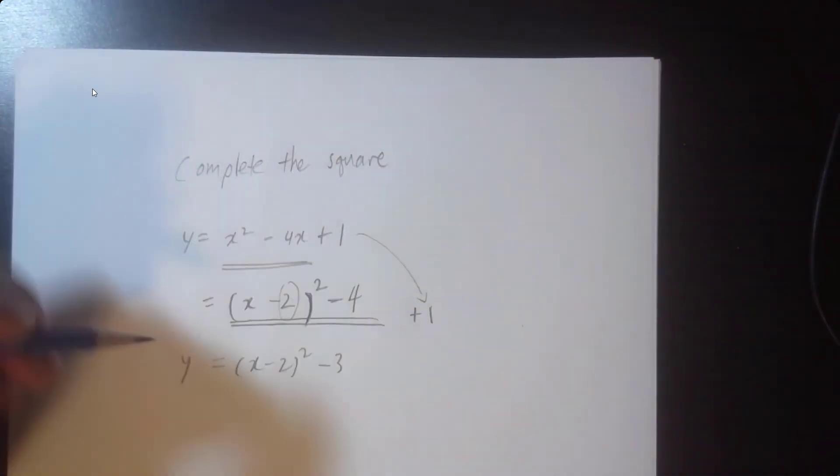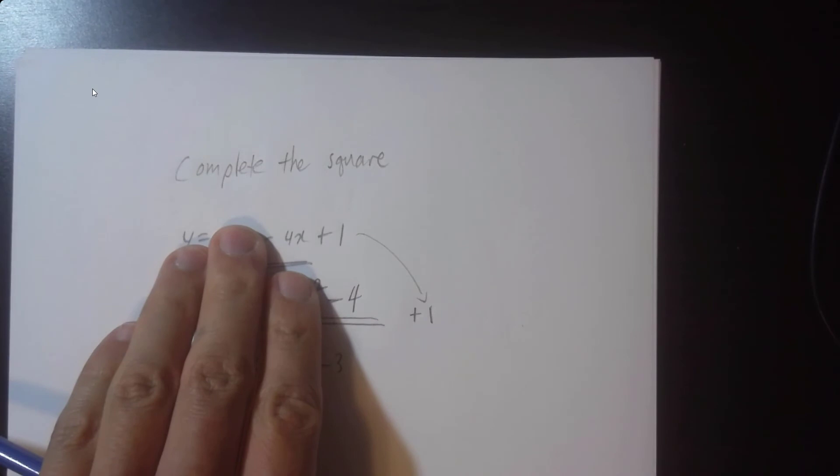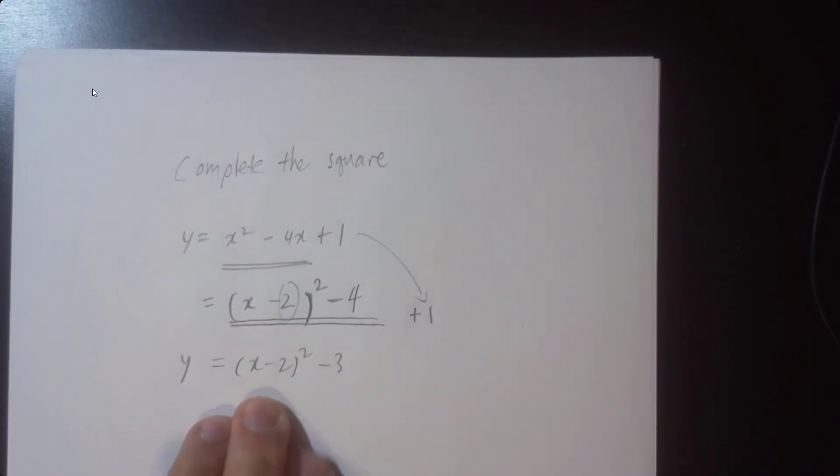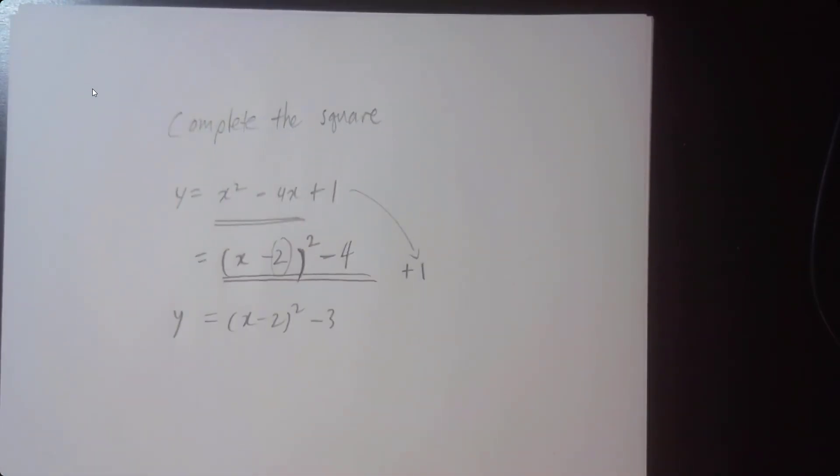So what's the point of completing the square? Who cares? This here is equivalent to this, and the nice thing is now we know where the vertex is. The vertex is going to be the opposite of the x value, so the negative 2 here means it's going to be positive 2. But the y value here, negative 3, remains the same. So the coordinates of the vertex is going to be 2, negative 3.